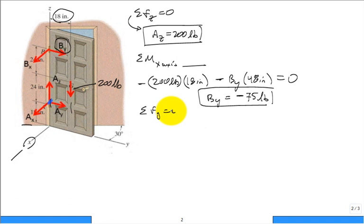Now I can do sum of the forces in Y equal to zero that will give me Ay. Ay plus By must equal zero. Hence Ay is equal to negative of By, and By is negative 75, so I got two negative signs. 75 pounds positive.